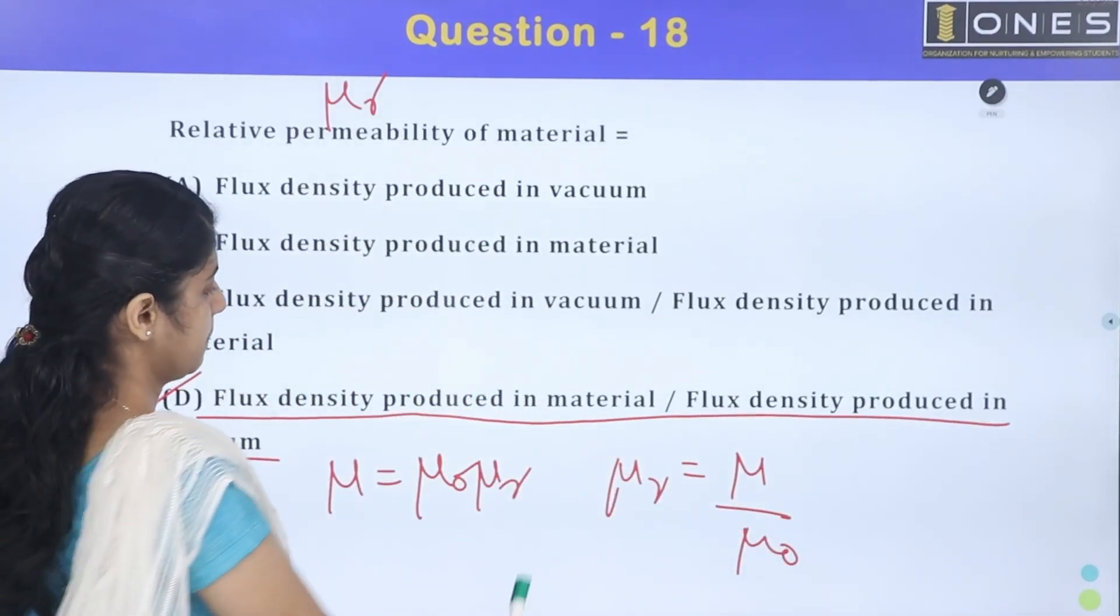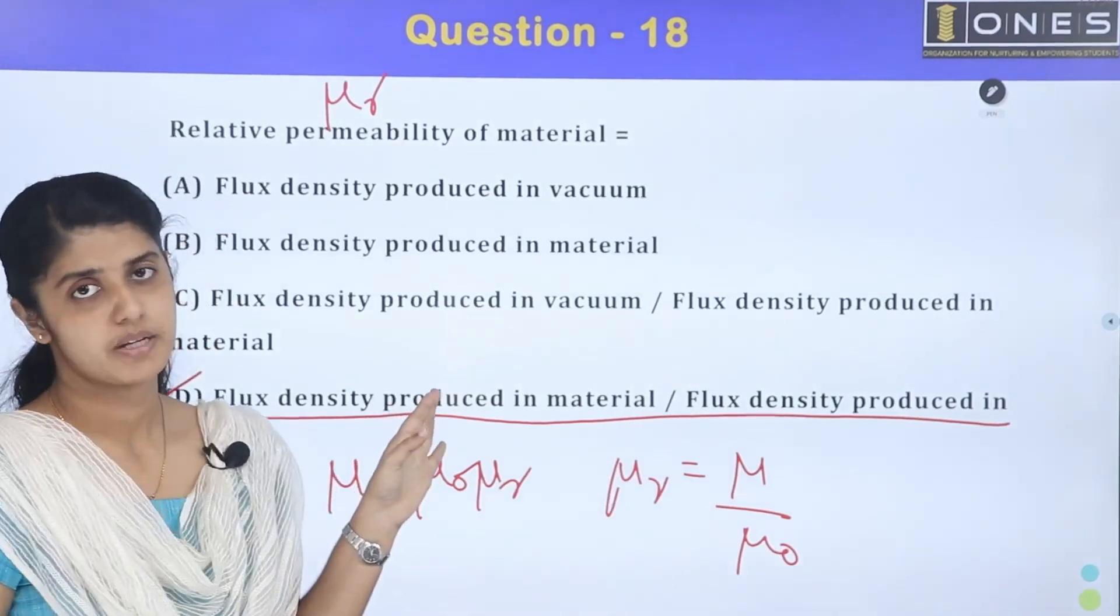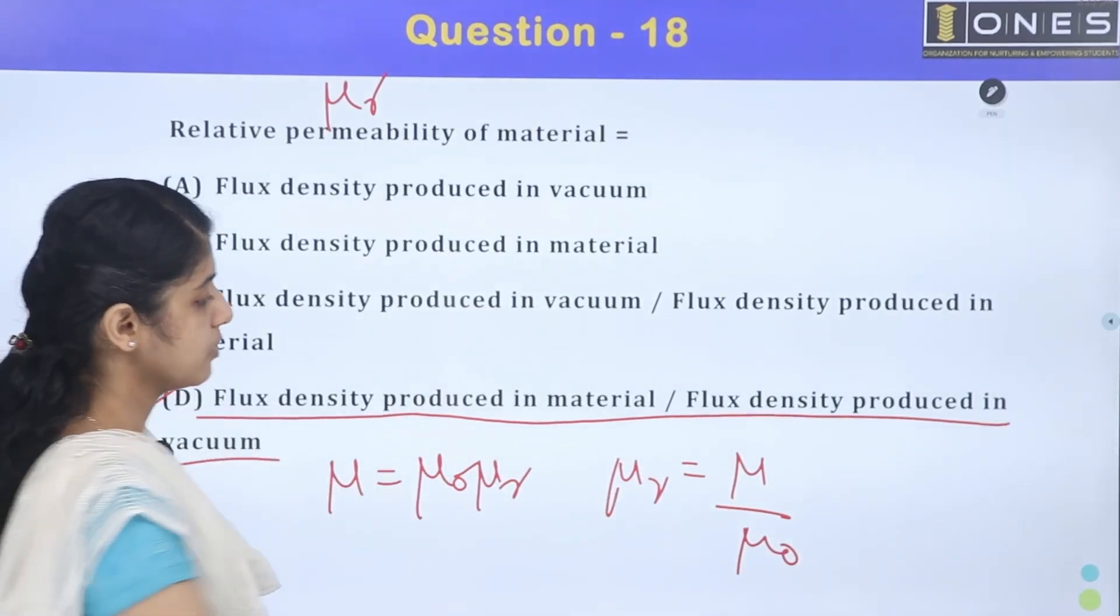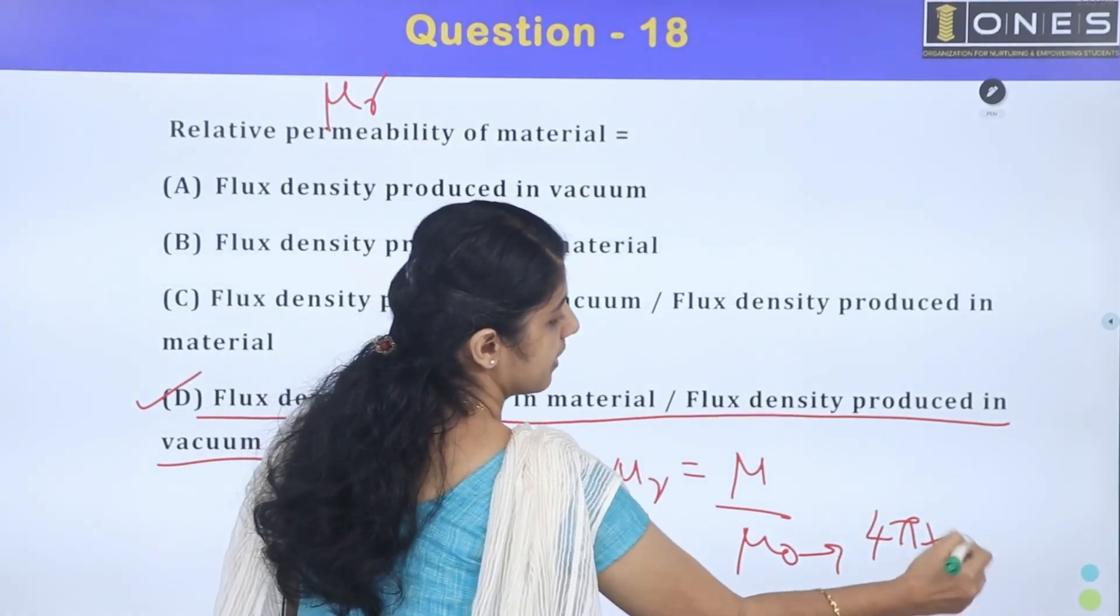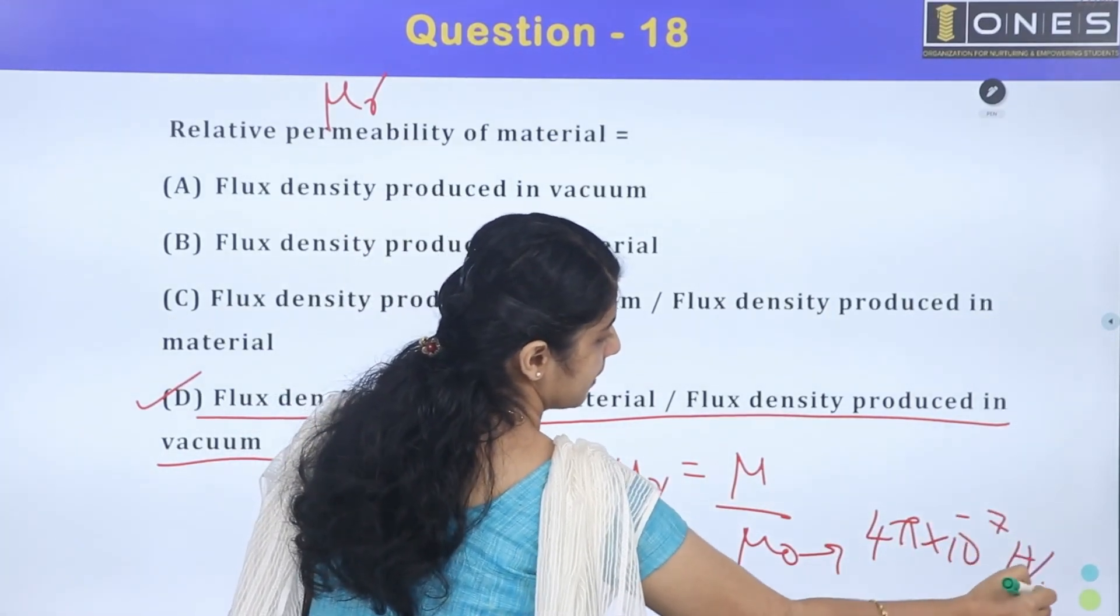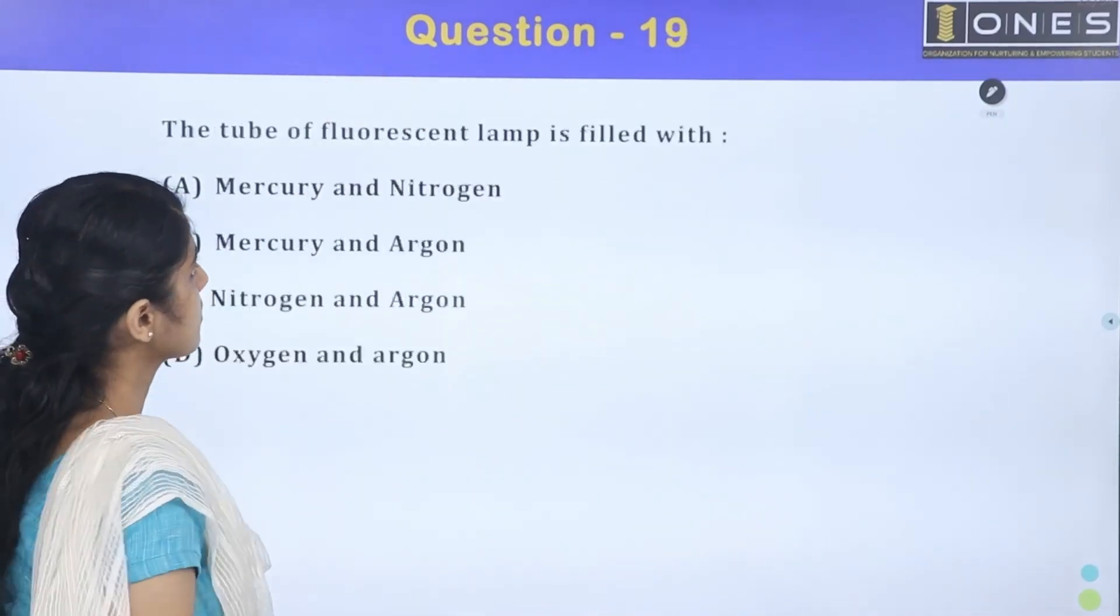I asked you the question, the constant value, mu zero value. Mu zero value is 4 pi into 10 raise to minus 7 henry per meter. Next question.